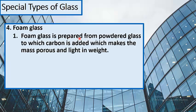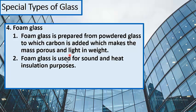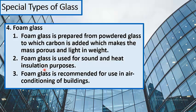Foam glass is prepared from powdered glass to which carbon is added, which makes the mass porous and lightweight. Foam glass is used for sound and heat insulating purposes and is recommended for use in air conditioning of buildings.